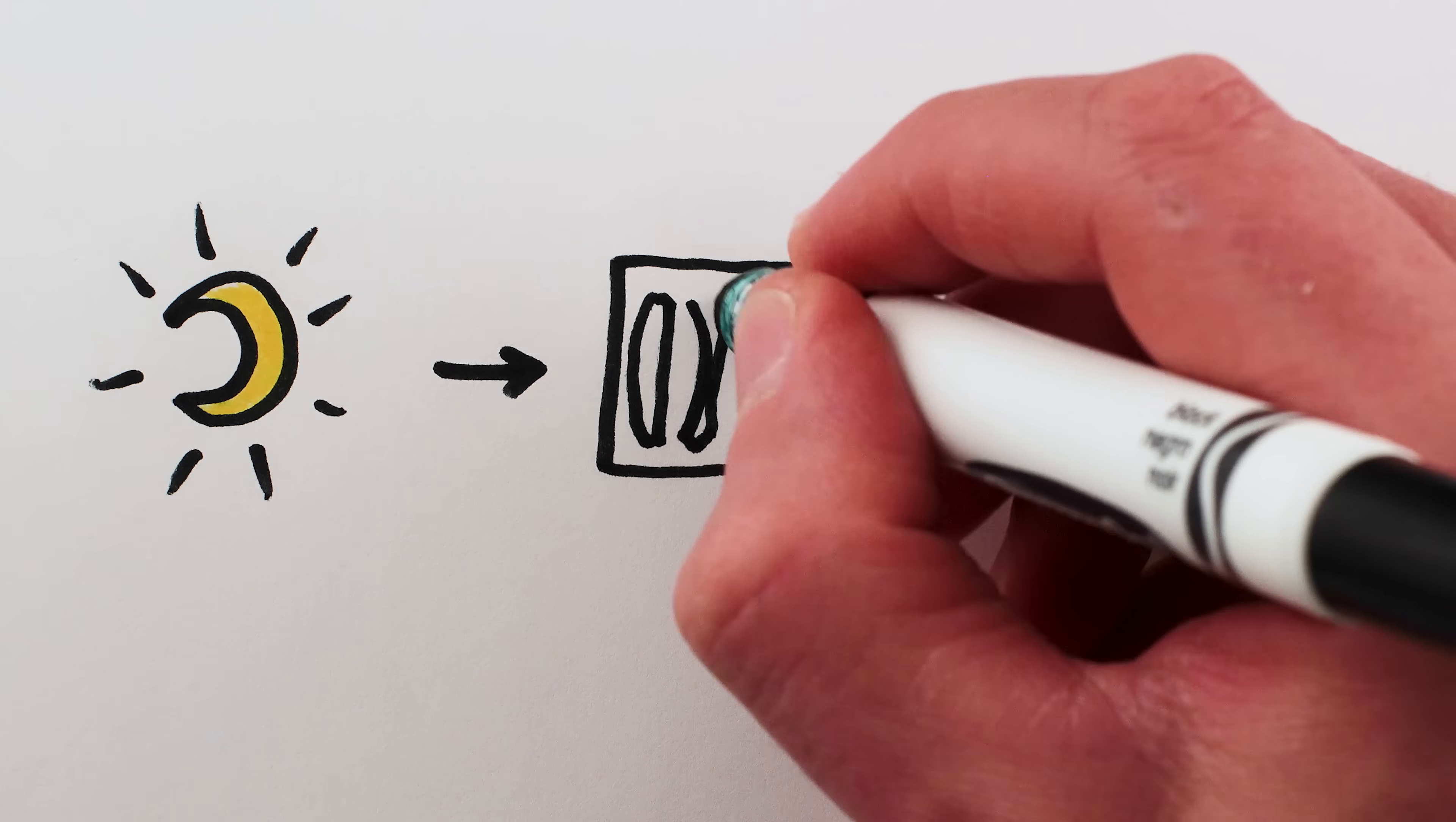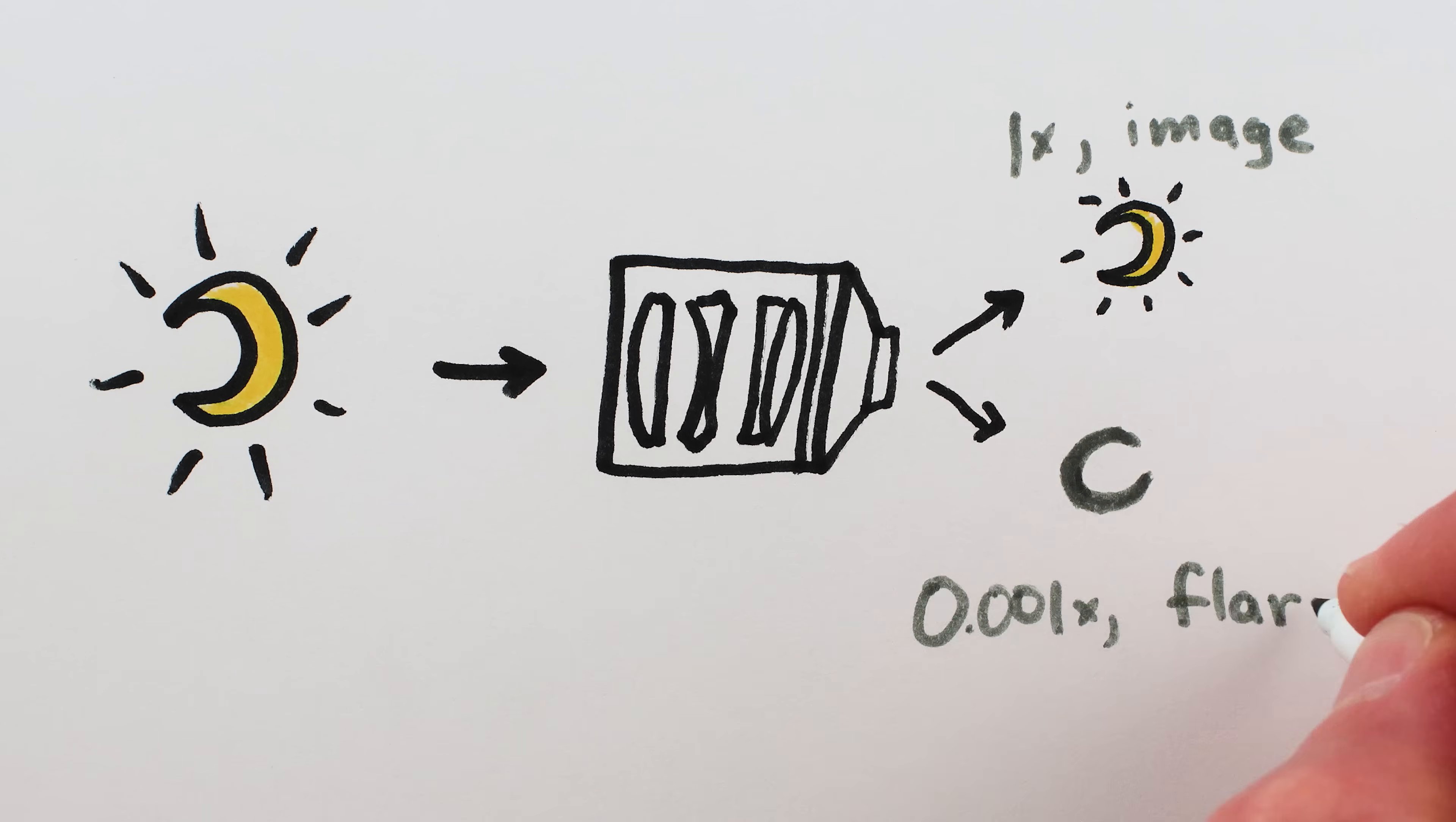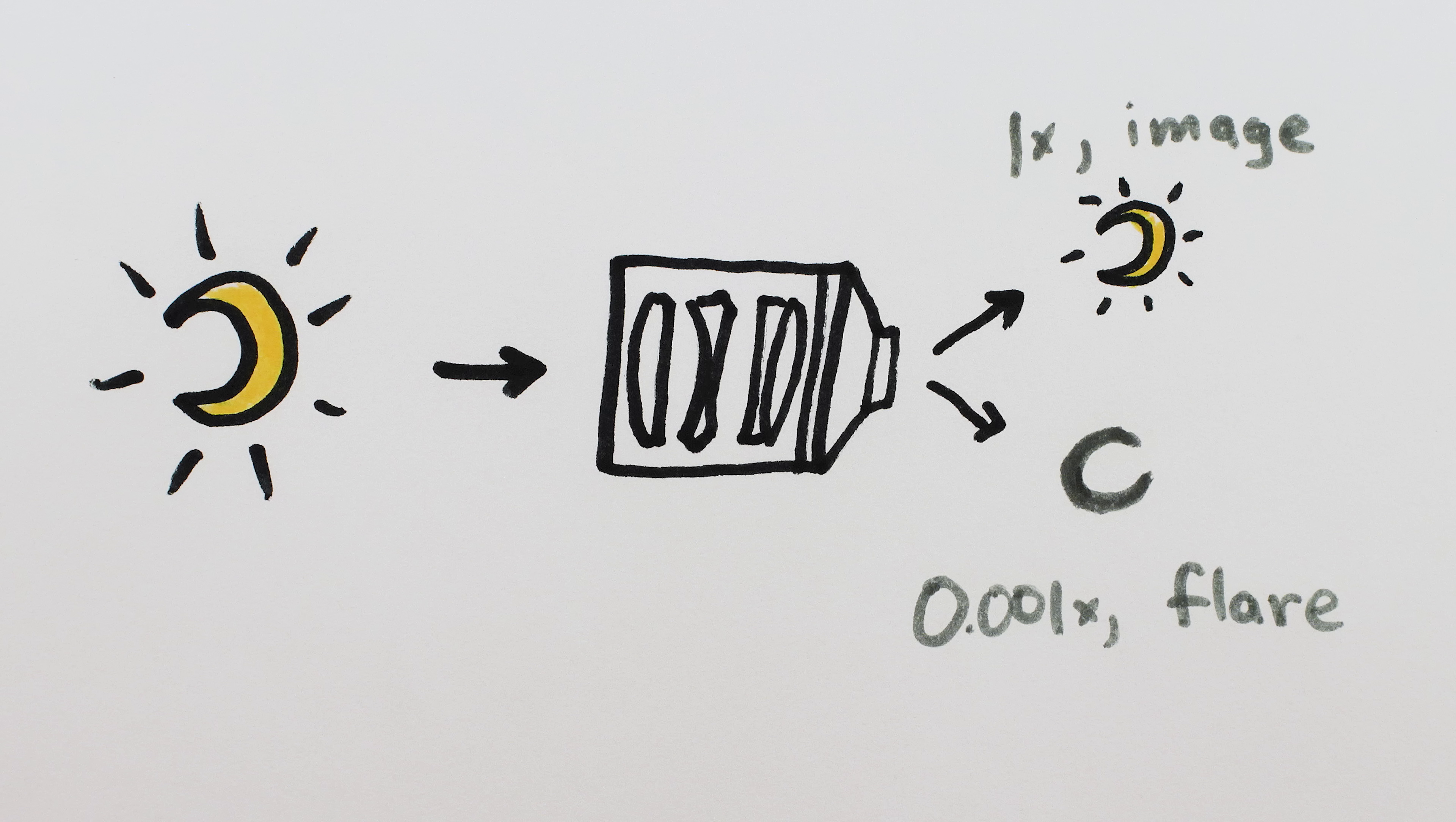Second, regardless of how the flare was created within the lens, its light had to have been dimmed enough relative to the powerful brightness of the sun that the flare doesn't create its own haze and glow and flaring. It's a correctly exposed photo of an eclipse, obtained using a lens defect rather than a solar filter.